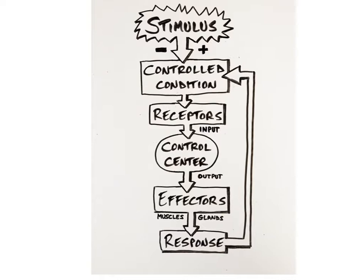Regardless of the type of feedback system, they all have three components in common: a receptor, a control center, and an effector. When a stimulus disrupts homeostasis, it will either increase or decrease the controlled condition. A receptor constantly monitors the controlled condition, and when changes occur, sends input about the change to the control center. Receptors are usually sensory nerve cells specialized to respond to specific types of stimuli, such as chemical concentration and temperature, and the input they send is in the form of nerve impulses or other chemical signals.